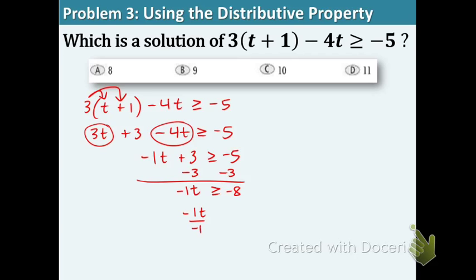What do we do with the symbol? We flip it. When we divide by a negative, the symbol is flipping. Now the T is by itself and we get a positive 8 over there. So the answer is T is less than or equal to 8.